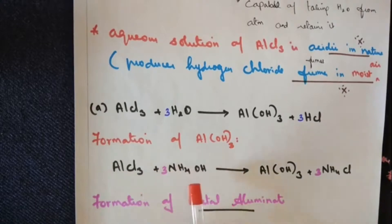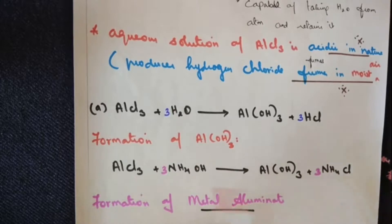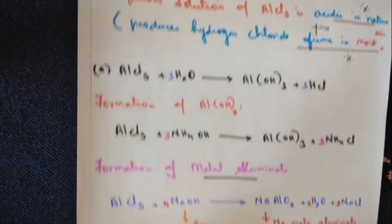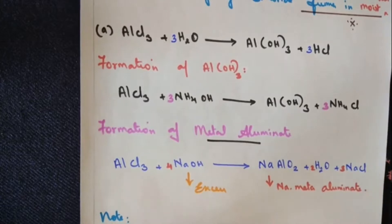Formation of aluminium hydroxide: AlCl3 you treat with ammonium hydroxide, we get aluminium hydroxide and ammonium chloride. Interchanging of ions takes place here. Aluminium combines with the hydroxyl ion, chlorine combines with ammonium ion, producing aluminium hydroxide and ammonium chloride. Next is formation of metal aluminate.